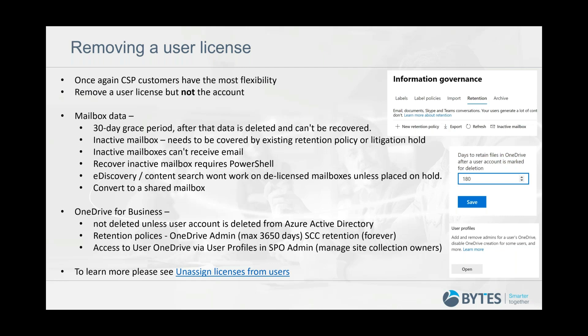Unless, of course, you had retention policies on that mailbox — if the user was covered under a retention policy or legal hold, the mailbox would go into an inactive mailbox state, visible in the information governance section of the security and compliance center under retention. It can also be recovered or restored, but that requires PowerShell scripting. For example, if you remove the licence and three months later want to reactivate that user, you re-assign the licence which creates a new mailbox, and you then have to recover the inactive mailbox into that new mailbox and merge the two together — much more difficult to manage.